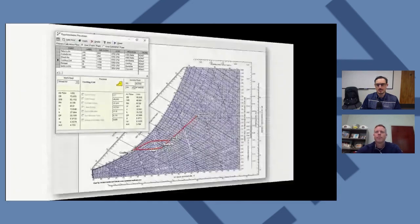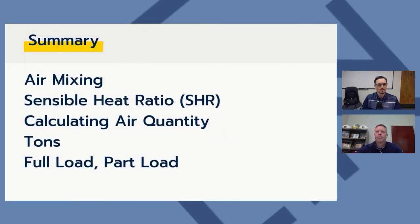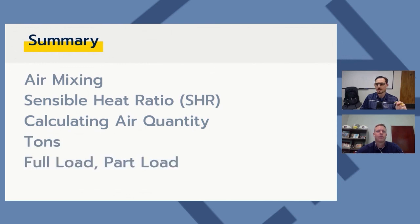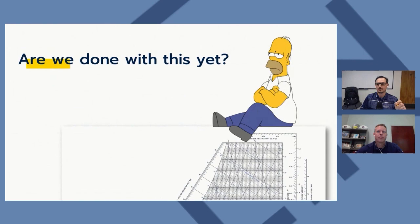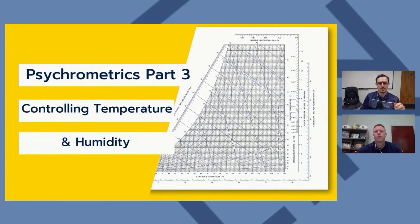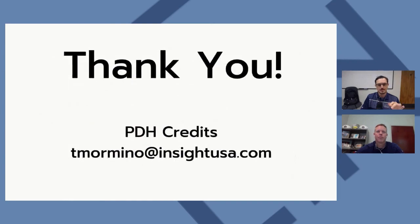To summarize, we covered air mixing, sensible heat ratios, calculating air quantity, tons of refrigeration, and full load versus part load behavior. We're not done with psychrometrics — part three is coming, which will specifically address controlling both temperature and humidity across all load conditions, covering reheat, single zone VAV, and desiccants. We'll email it out when it's ready.